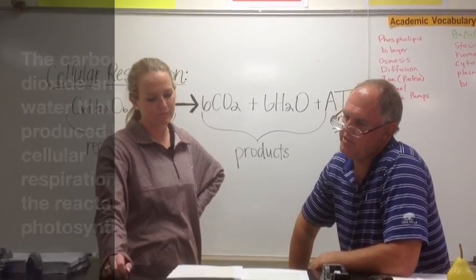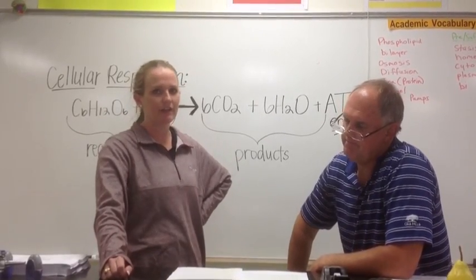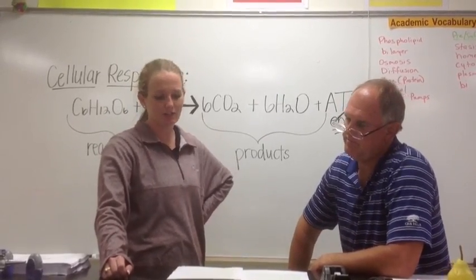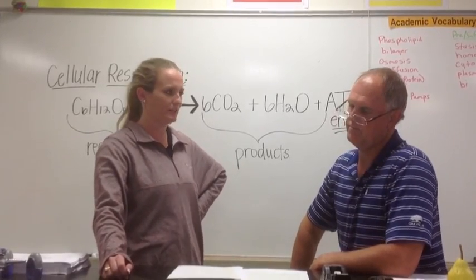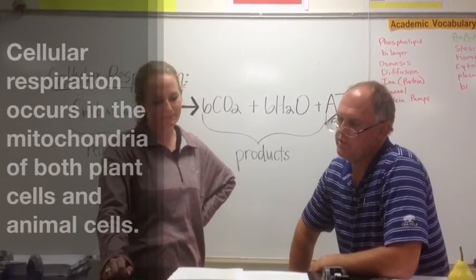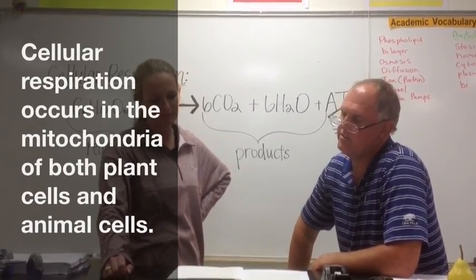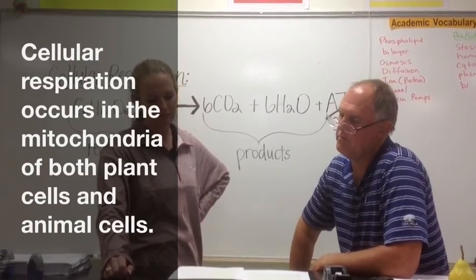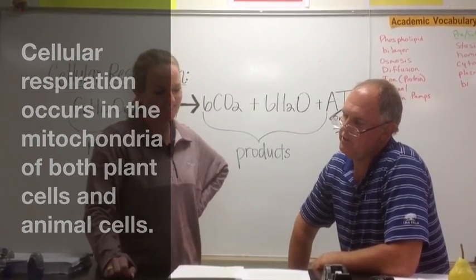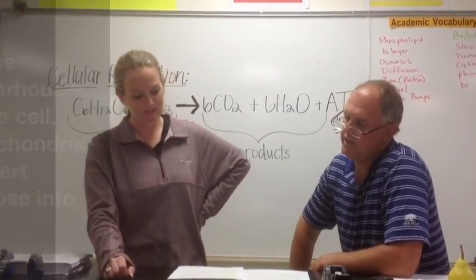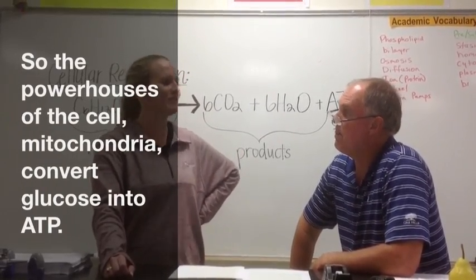Where does cellular respiration take place in the cell? Cellular respiration occurs in the mitochondria of both plant cells and animal cells. So that's where the term powerhouse of the cell comes from. Mitochondria take glucose molecules and turn them into ATP.